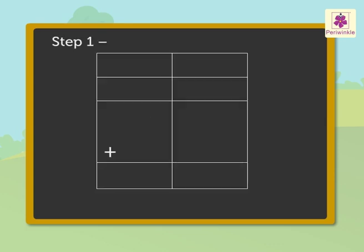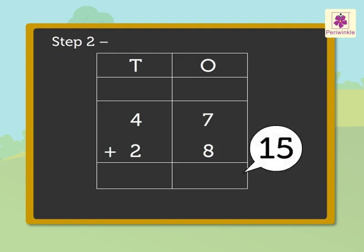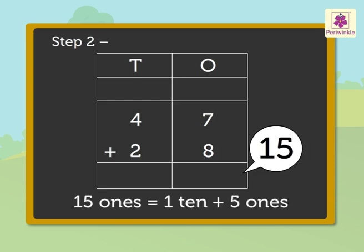Step 1: Write the numbers in the tens and ones columns. Step 2: Add the ones, that is, seven plus eight is equal to fifteen. Regroup the fifteen ones, that is, fifteen ones is equal to one-ten plus five ones.